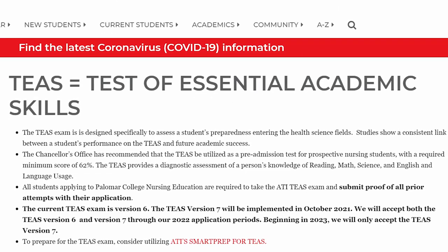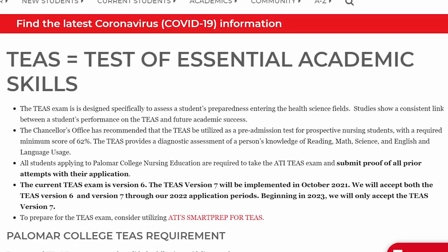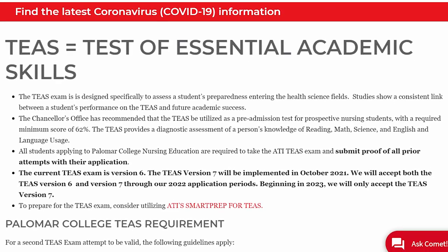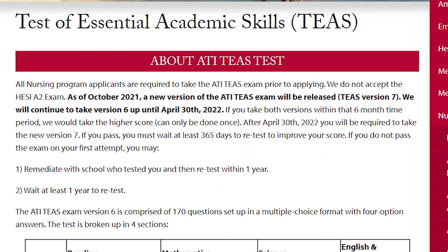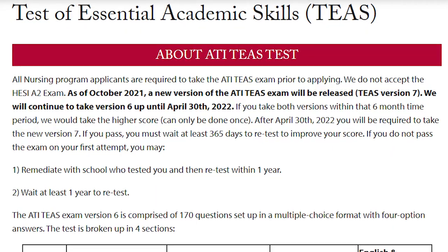The first example is from Palomar College in San Marcos, California. They are saying they will accept both TEAS version 6 and version 7 through their 2022 application periods — so not only the rest of this year but all the way through 2022 they will accept TEAS 6 scores.